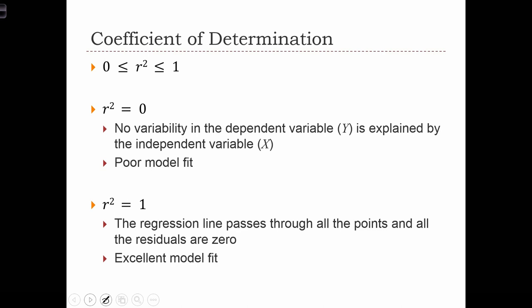If r-squared equals 1, then the regression line in this extreme case passes through all the points and all the residuals are equal to 0. So this could only happen if the points in our sample were perfectly linear and perfectly plotted along the regression line. R-squares close to 1 are going to indicate excellent model fit.